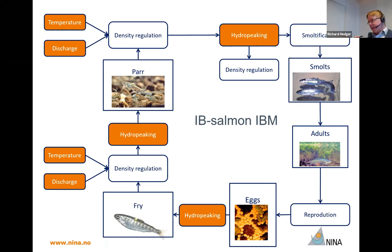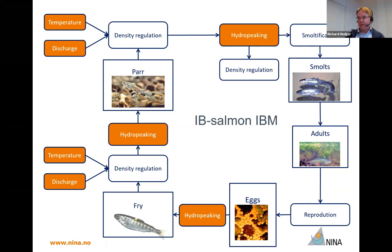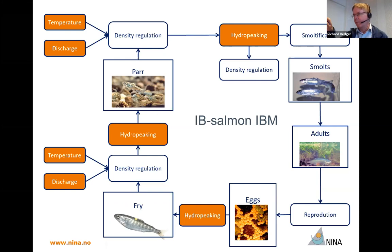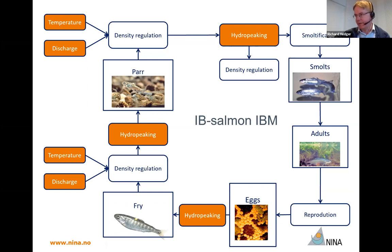We use this mechanistic approach because what occurs at one part of a salmon's life will be influenced by what occurs at another part. For instance, if hydro peaking causes high mortality in juveniles, that results in a reduction in population abundance. But this reduction will cause a cascade of other effects that might cause decreases in subsequent mortality. So it's important to understand how the effects of hydro peaking propagate through the life cycle when determining the aggregate effects.